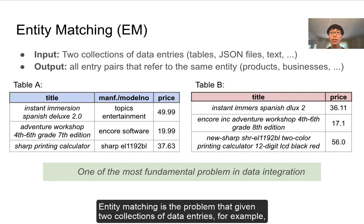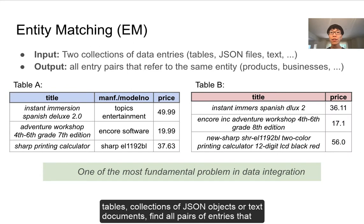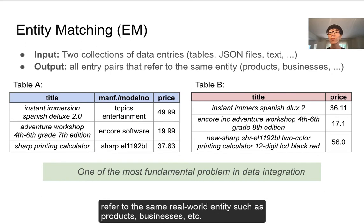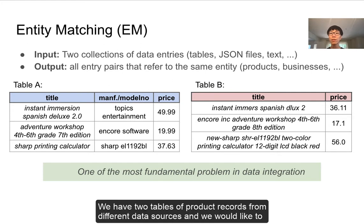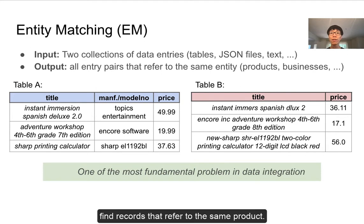Entity matching is the problem that given two collections of data entries — for example, tables, collections of JSON objects or text documents — find all pairs of entries that refer to the same real-world entities such as products, businesses, etc. This is an instance of the entity matching problem: we have two tables of product records from different data sources and we would like to find records that refer to the same real-world product.